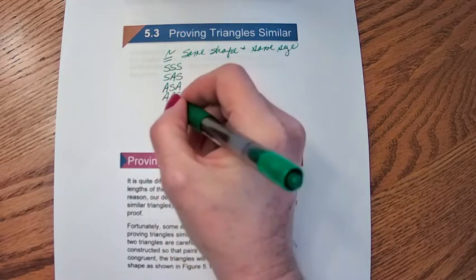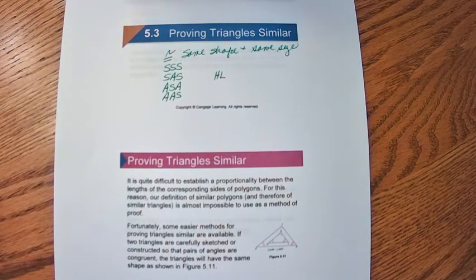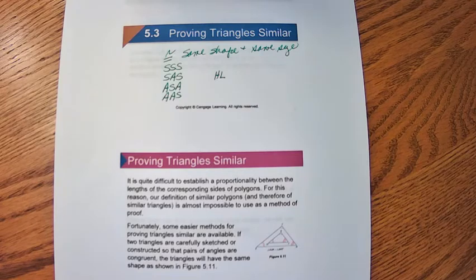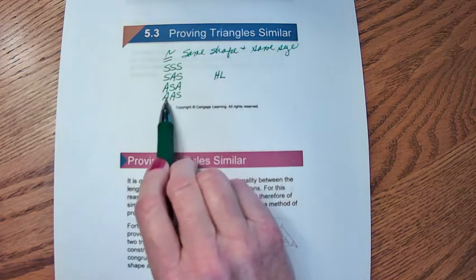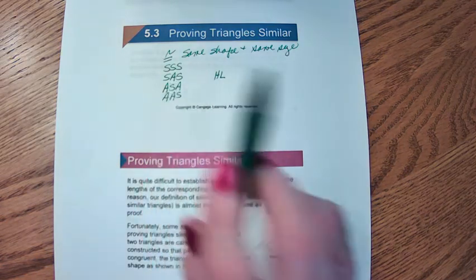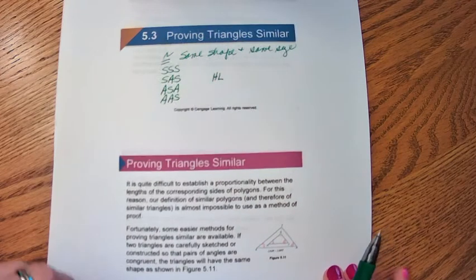And then for right triangles there was also hypotenuse-leg. If you had two right triangles and their hypotenuse and leg were congruent, those would be congruent triangles. These are the types of reasons we're going to use to prove that triangles are similar — except the angles will have to be congruent, but the sides will have to be in proportion. That's what we have to remember.